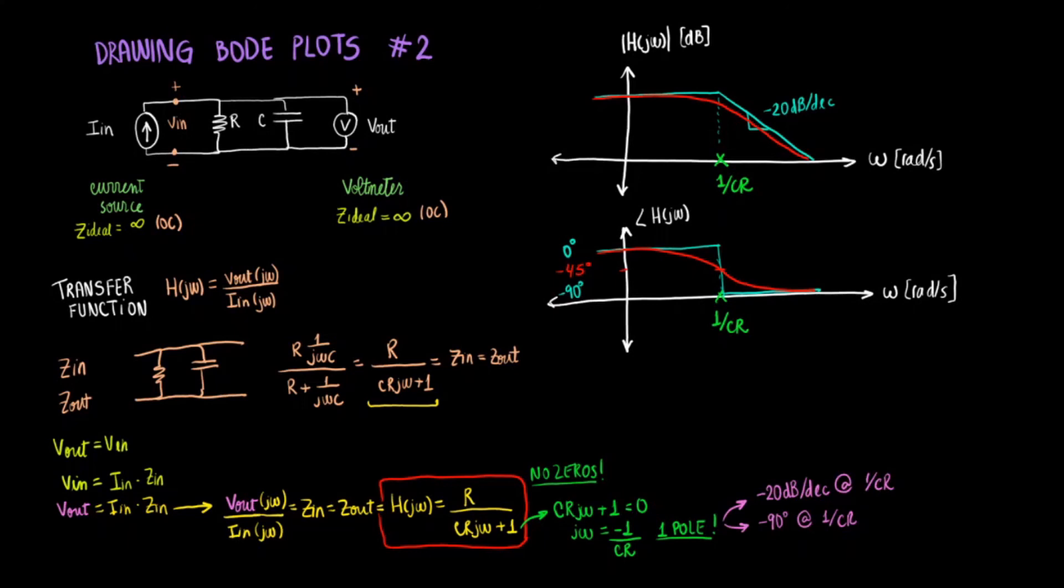So since we only had one pole, this is basically what our plot is going to look like. And something really cool that you may notice from this is that we are letting the low frequency, low frequencies pass. Whereas after the cutoff frequency, we start attenuating. So different from the previous video, this plot right here will be the plot of a low pass filter.